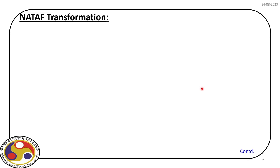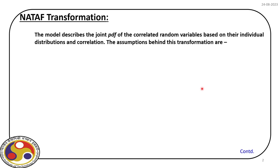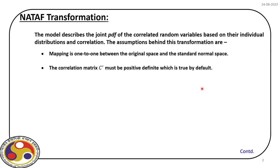Today we are going to discuss a different model. Again, our main task is to find out the joint distribution based on marginals and the correlation coefficient. Two main points to note: we start with the original space x and convert it into standard normal space — which was not done in the previous transformation. We will express the joint distribution with the help of the standard normal distribution, with a one-to-one mapping between original space and standard normal space.